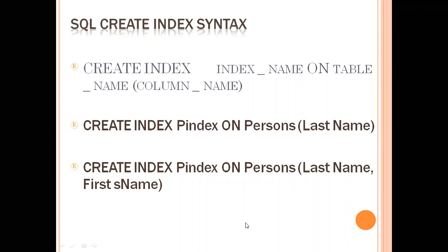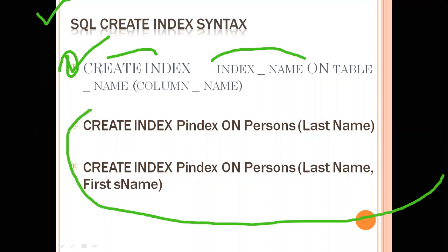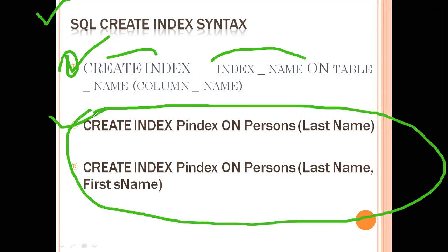In SQL, how do you create an index? The syntax is very simple: CREATE INDEX index_name ON table_name (column_name). So just as we have CREATE TABLE, we similarly have CREATE INDEX. You specify the index name, then the table name on which you want to create the index, and then the column name on which the index should be built.